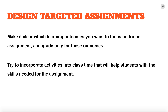Another way to cut down on grading time is to make sure that any graded assignments you set are explicitly focusing on one or two particular learning outcomes for students. This should result in better student papers, which are therefore easier to mark, and also saves you time in giving them feedback.